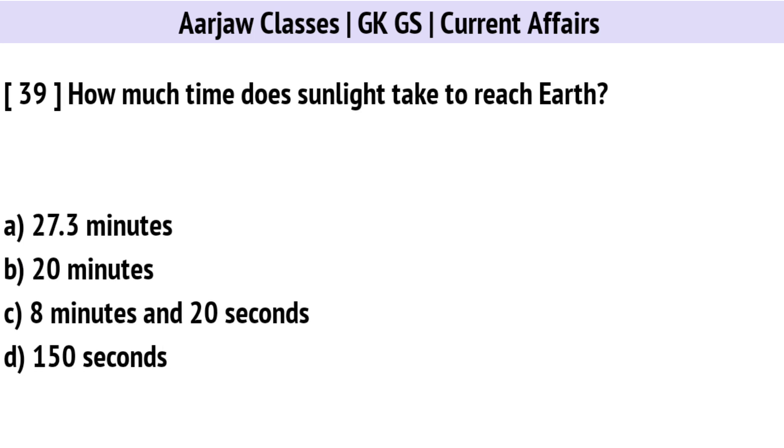How much time does sunlight take to reach Earth? The right option is C: 8 minutes and 20 seconds.